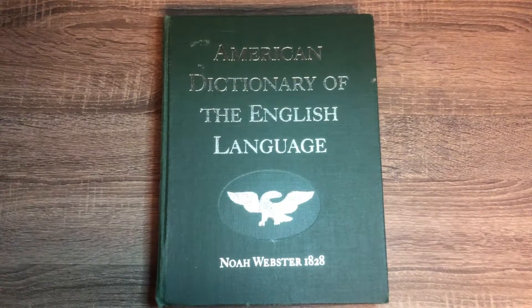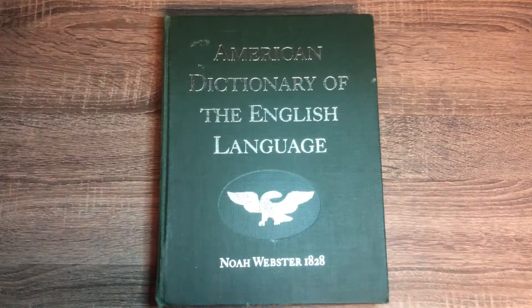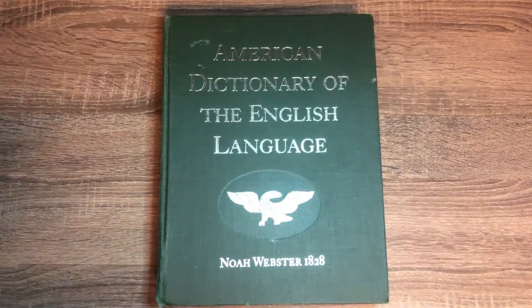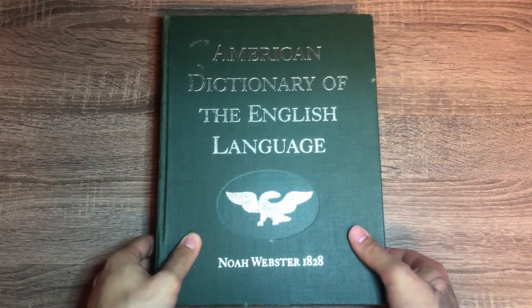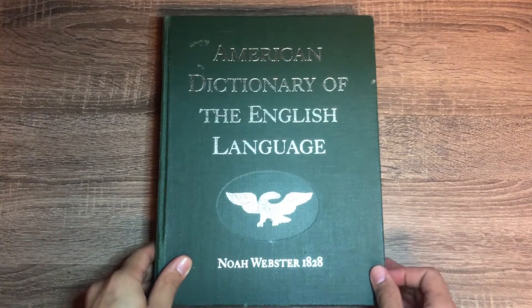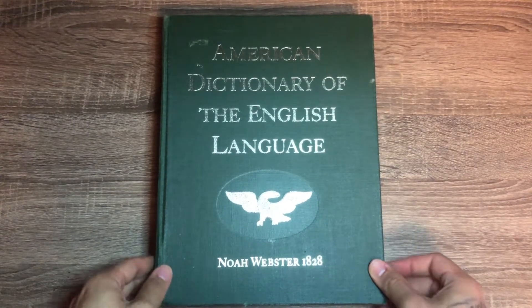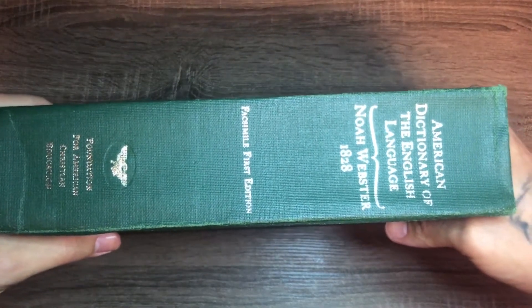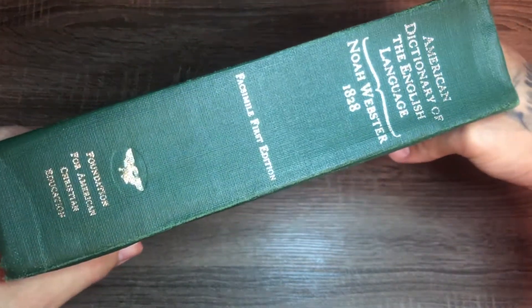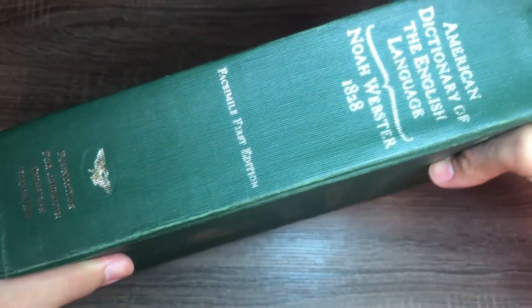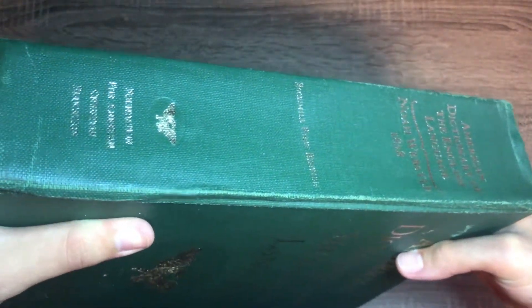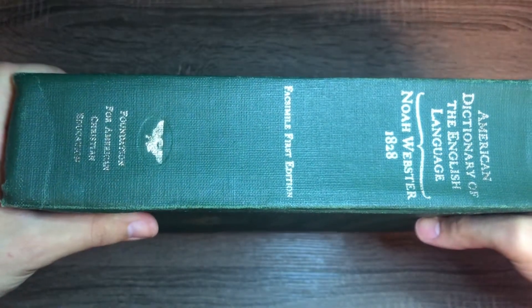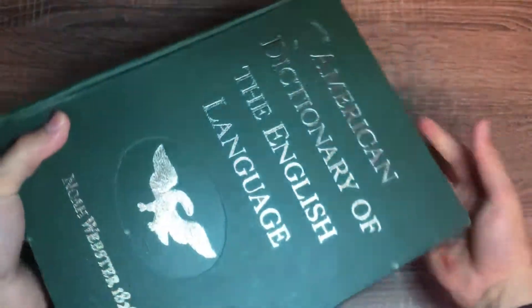Hey how's it going guys, real world bible believer here back with another video. Today I have a quick one. We're just going to take a little look at this American Dictionary of the English Language, Noah Webster 1828. Pretty much guys, if you want a dictionary that is going to be very accurate to the English in your King James Bible, this is the one that you want.